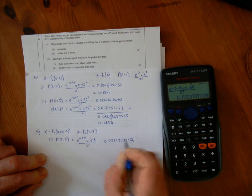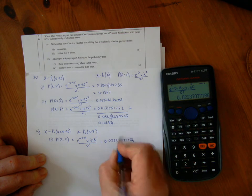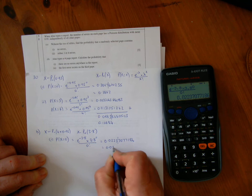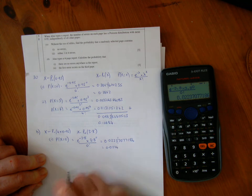That's 0.02237086... To 4 decimal places, the 7 is more than 5, so we increase the 3 to 4. That's 0.0224.